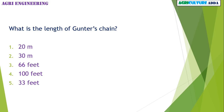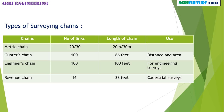What is the length of Gunter's chain? 20 meter, 30 meter, 66 feet, 100 feet, or 33 feet? The answer is 66 feet. These are the types of surveying chains: Metric chain — 20 or 30 links, length 20 or 30 meters. Gunter's chain — 100 links, length 66 feet, used for measuring distance in survey work. Revenue chain — 16 links, length 33 feet, used for cadastral survey.